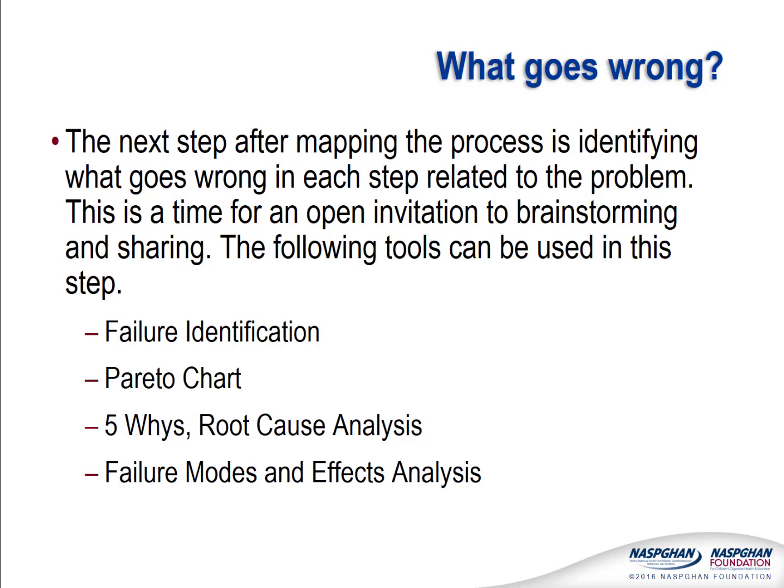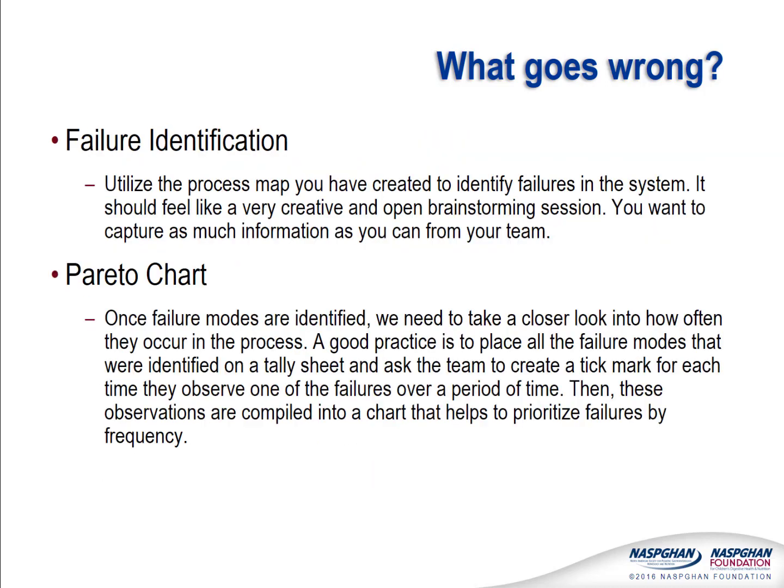After mapping out the process, the team should conduct a process review, paying attention to issues that do or could potentially result in the identified problem. A good way to start is to place the process map on the wall, then conduct the discussion either with an open forum or by allowing individual work through letting members place sticky notes with problems they see at each step. The goal is to obtain universal participation, capturing as many perspectives and problems as possible. Once failure modes are identified, they can be quantified through observation and data collection on the frequency of issues. Data collected in this way is often displayed in a Pareto chart so that failure modes can easily be prioritized by frequency.